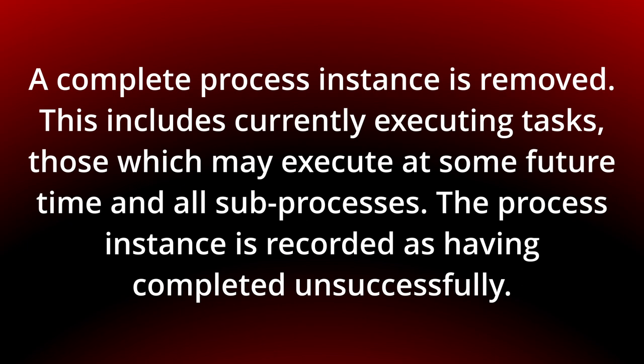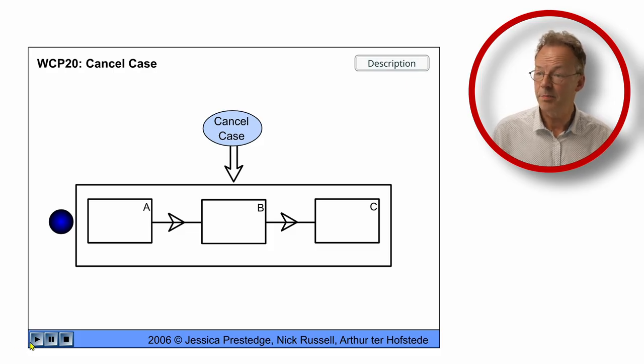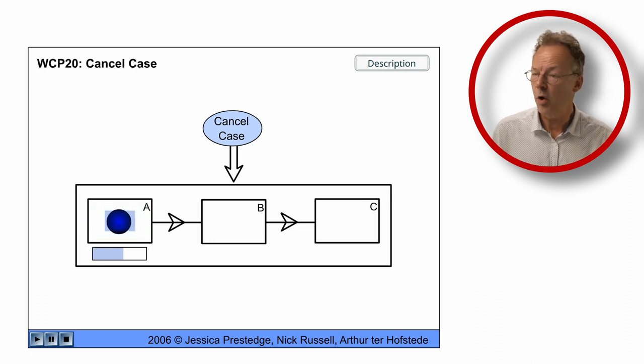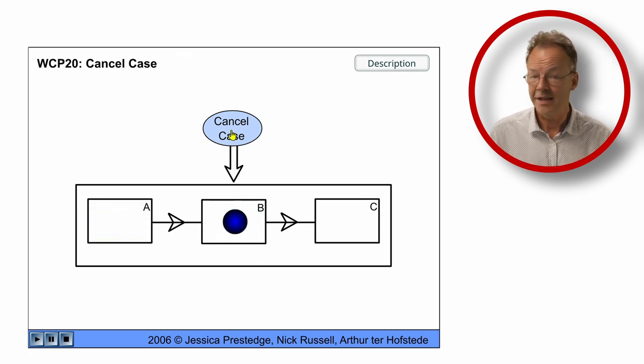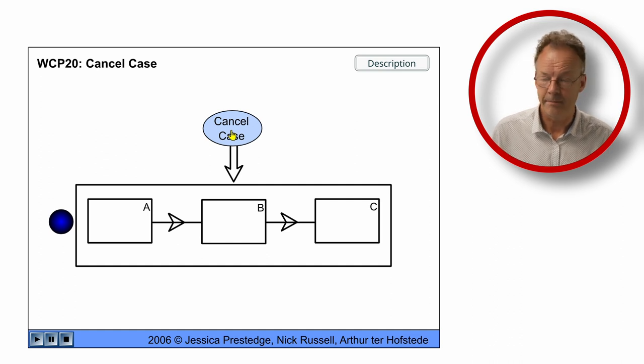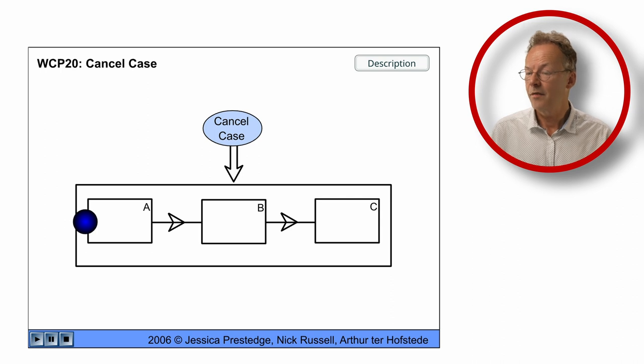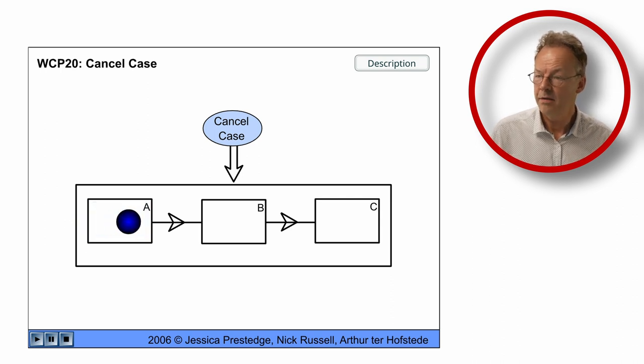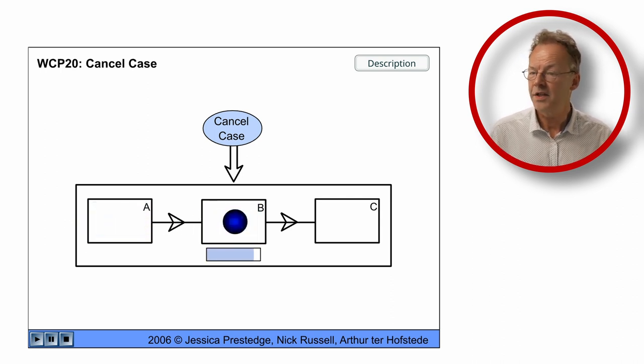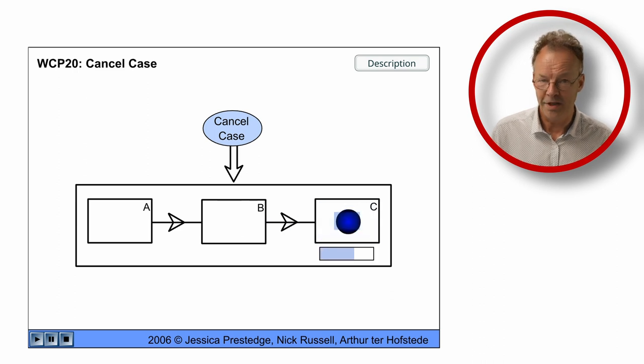You can see the behavior in the original flash animation. So here we have the cancel case possibility during the whole case and we cancel during the execution of B. In the next case, we have A, we have B, and then finally C, and we finish normally.